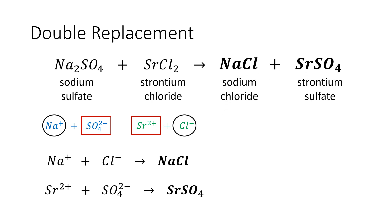So in the reaction of sodium sulfate and strontium chloride, it will produce two products: sodium chloride and strontium sulfate. Take note that this reaction is not yet balanced.